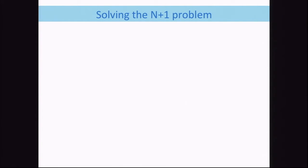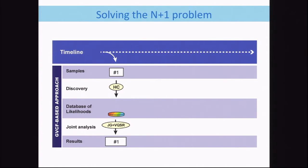How do we solve the N+1 problem? The solution is to have some sort of intermediate representation that captures all the information we would get from one BAM, and then we can do the calling further downstream. We can compile this information separately and then use a cheaper calling step to do the joint calling.